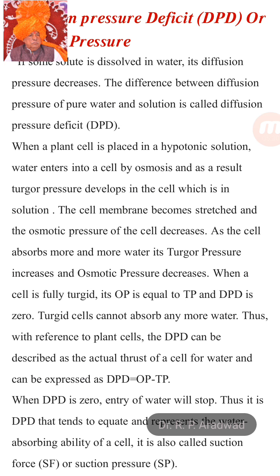When water enters into the cell, the water content in the cytoplasm increases, turgor pressure is developed, and as turgor pressure increases, osmotic pressure decreases. When the cell is fully turgid, it stops the absorption of water. In that process, turgor pressure is equal to osmotic pressure, and the diffusion pressure deficit is zero.